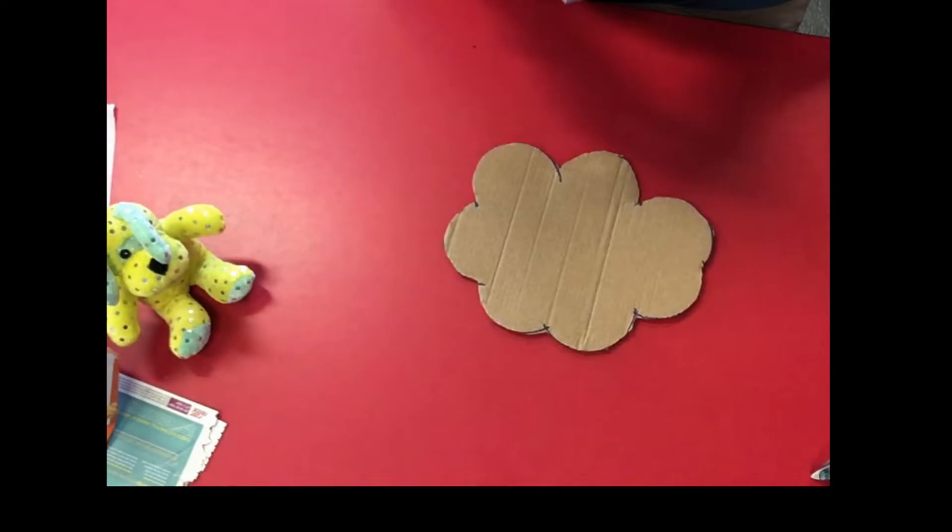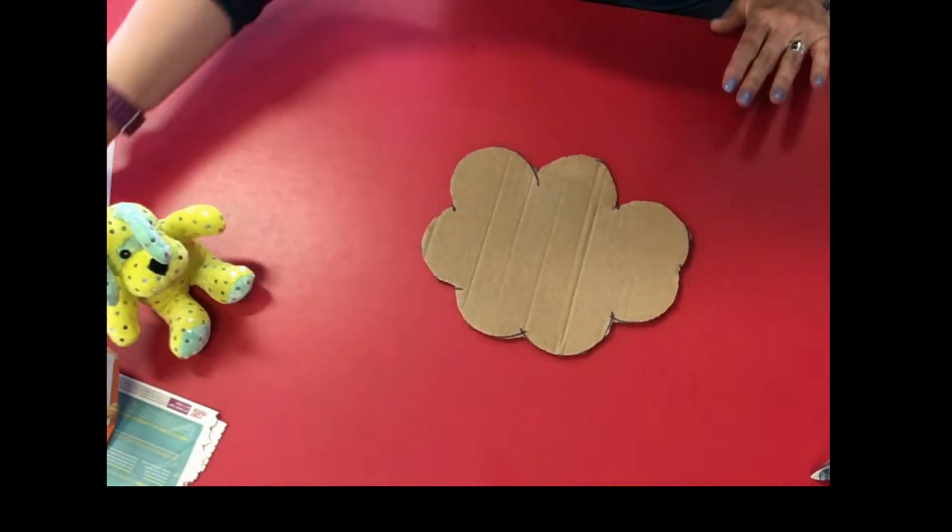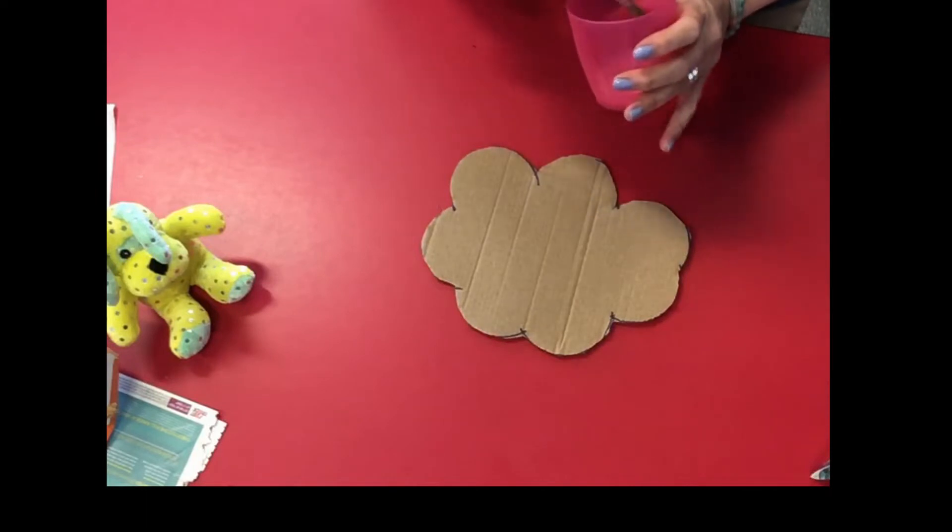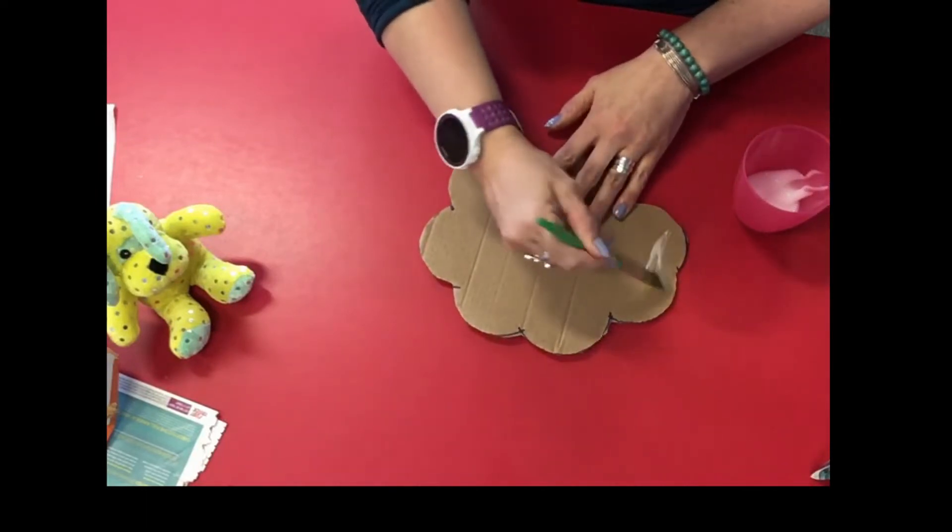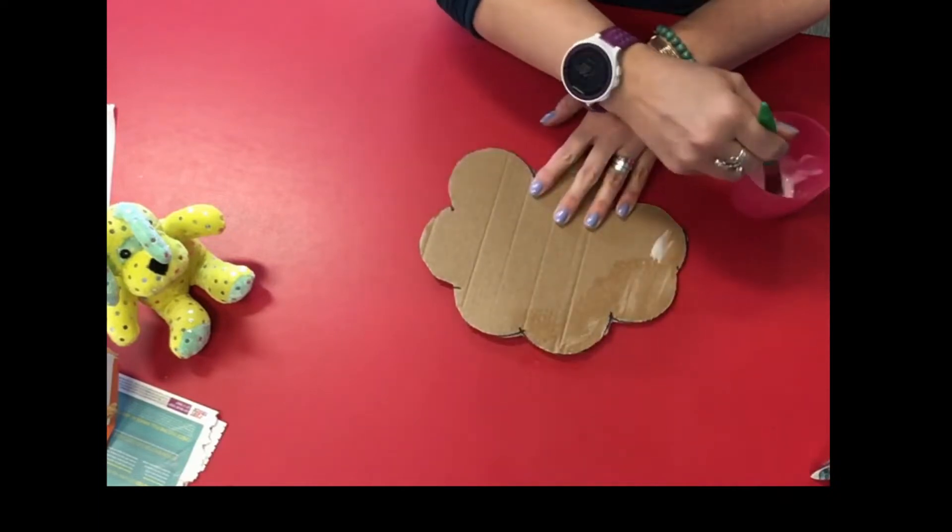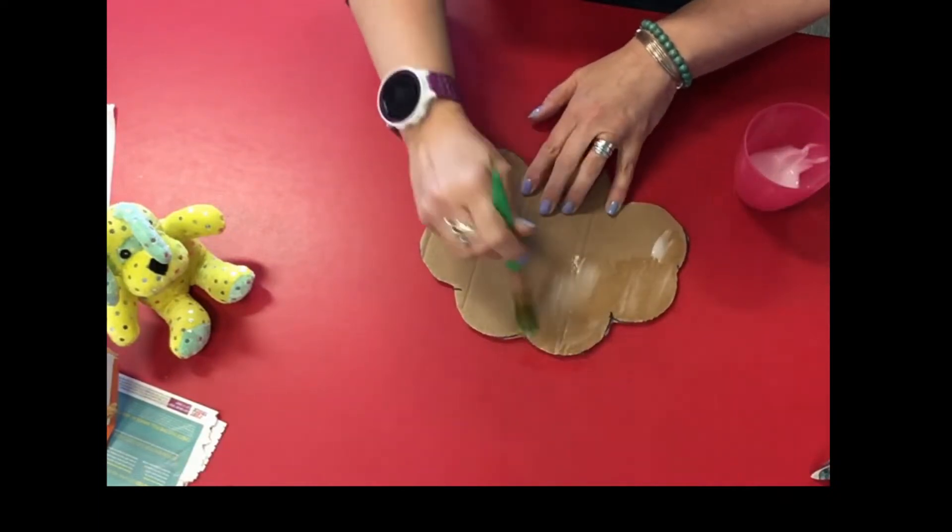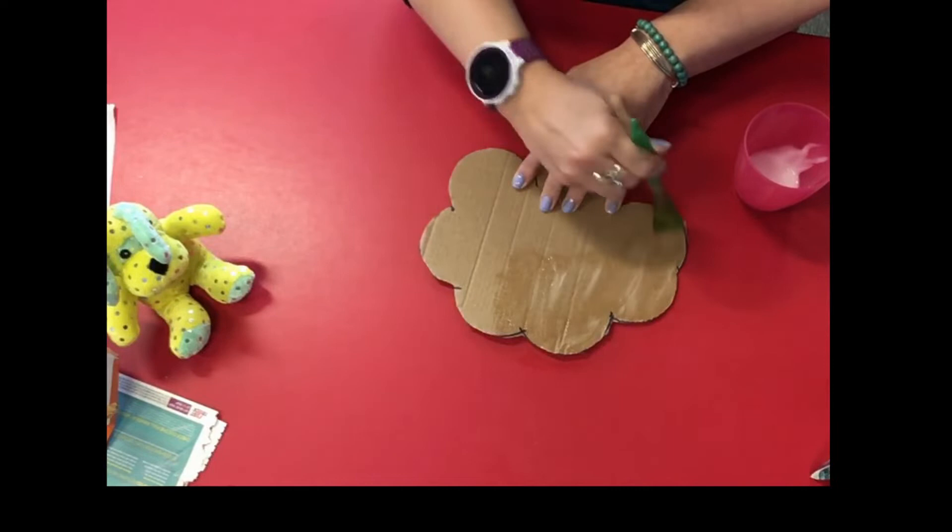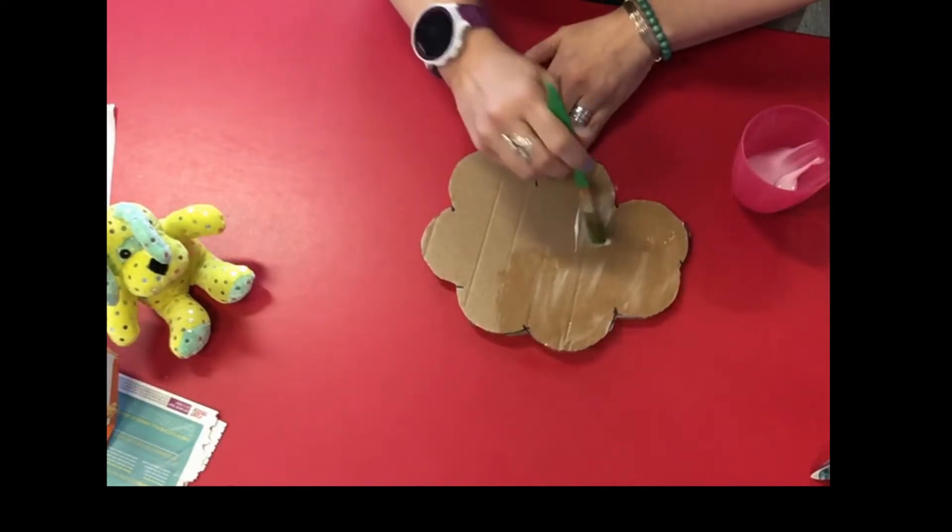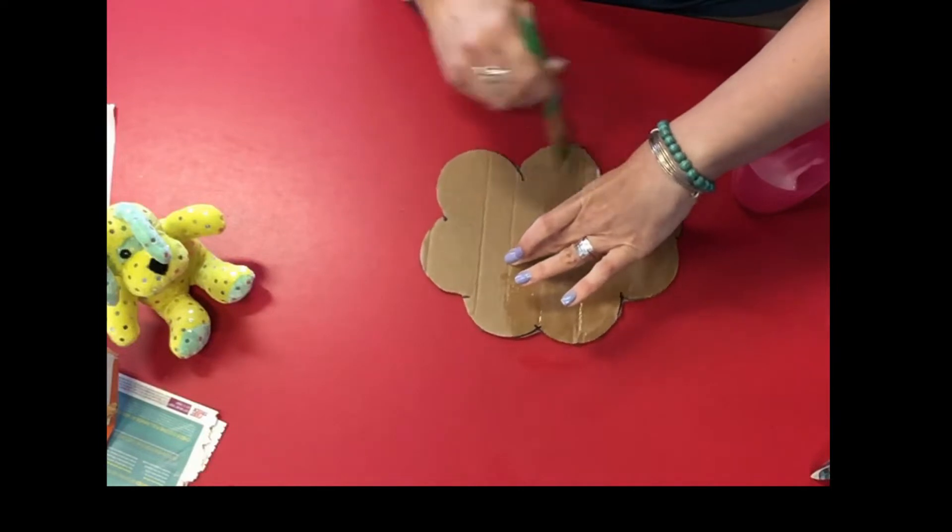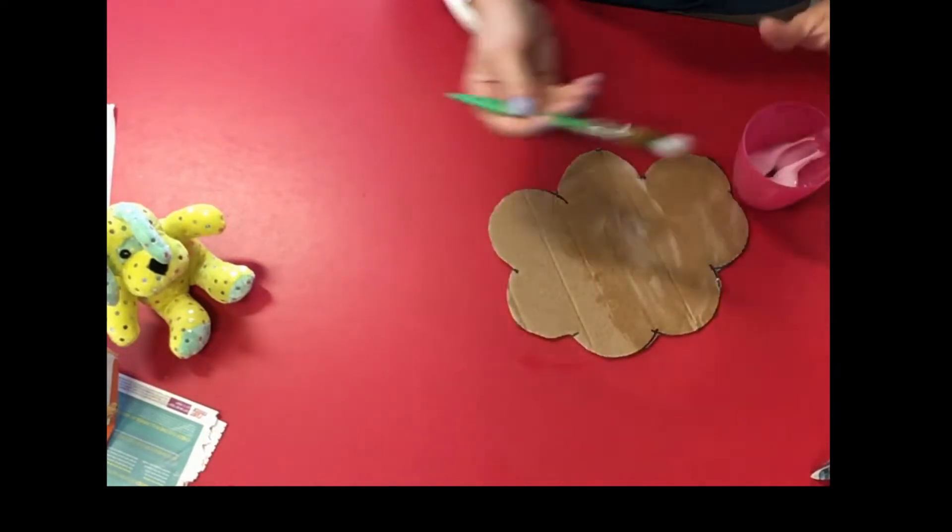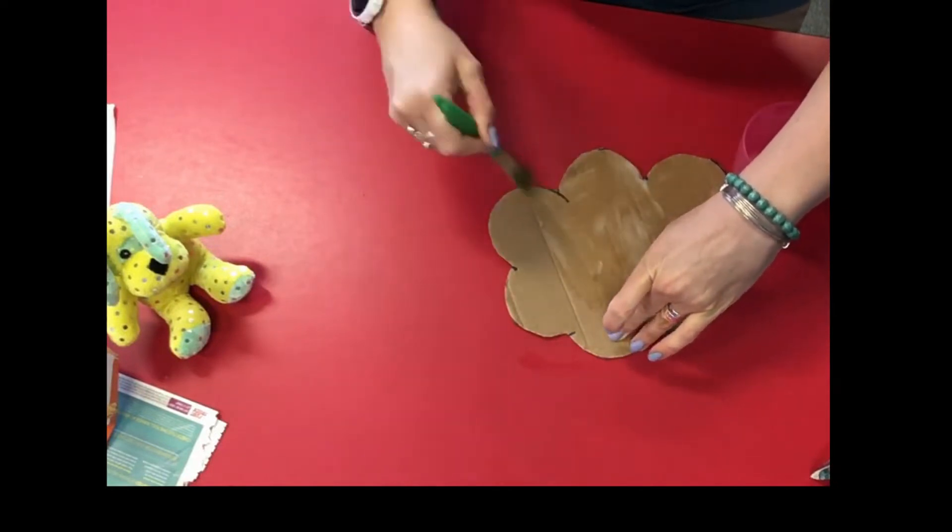Now we've got our cloud shape, we are going to use the liquid glue and we're going to paint all over. Now if you're doing this at your kitchen table, you might want to put something down so you don't get glue all over your table. You're probably going to get sticky hands doing this too, but don't worry, you can always wash your hands.